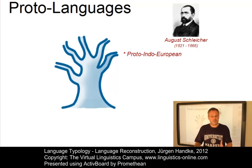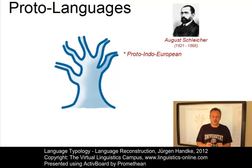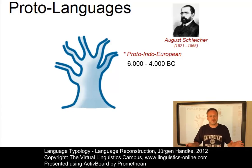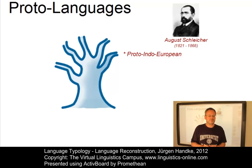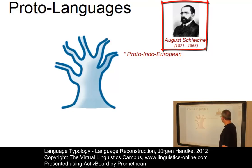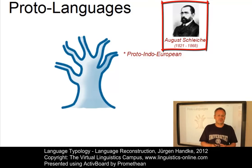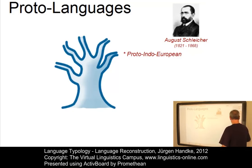Proto-Indo-European comprises most European languages and about one-third of all languages, and is assumed to have been spoken in Central Europe and South Asia between 6,000 and 4,000 years before Christ. The Indo-Europeans probably lived in Central Europe before they began to travel East and West between 3,500 and 2,500 before Christ. It was reconstructed by August Schleicher, who published his results in his monumental work, a compendium of the comparative grammar of the Indo-European languages.